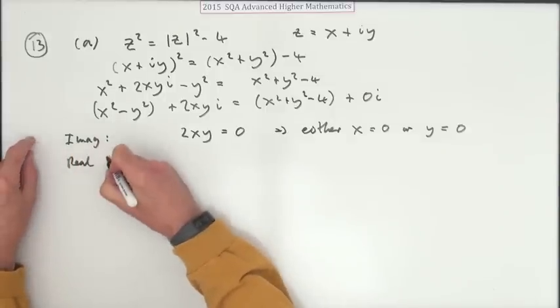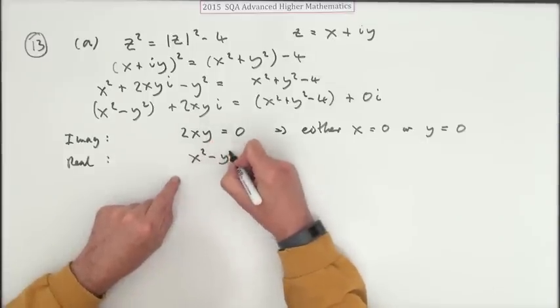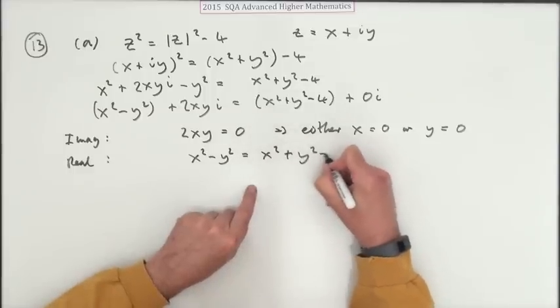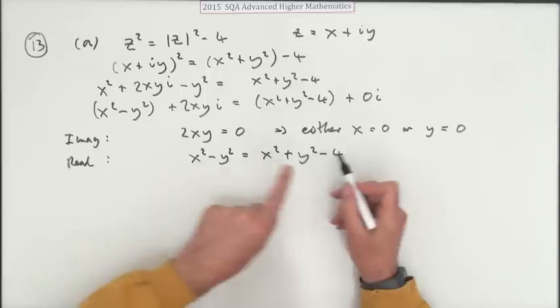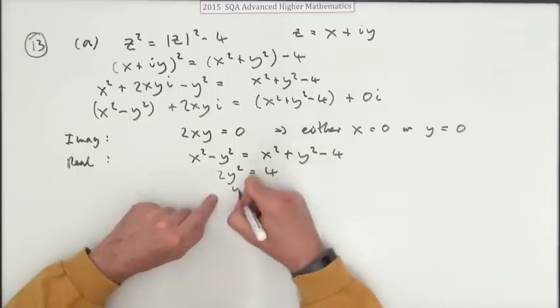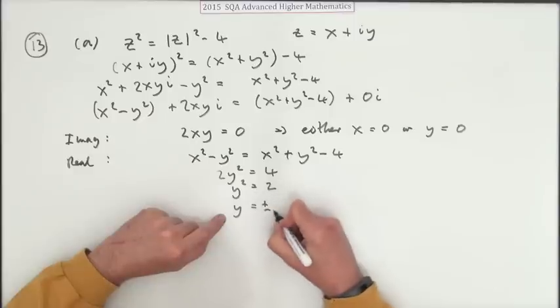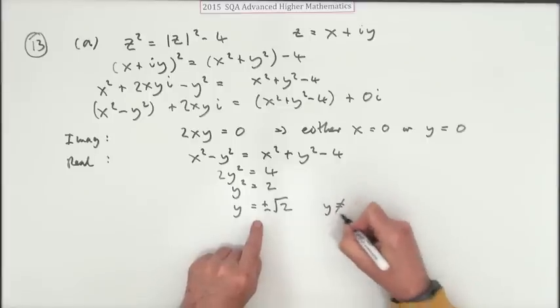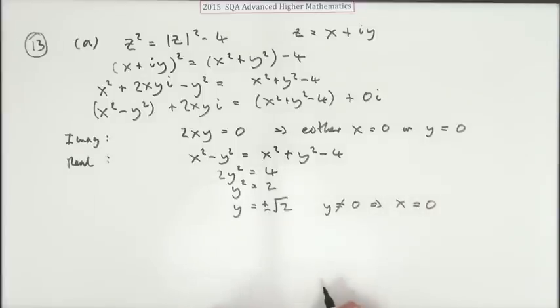Right, let's see what the real part tells us. The real part tells us that x² - y² = x² + y² - 4. x² disappears from this equation, and if I take that over and take that over I've got 2y² = 4. So y² is 2, so y is ±√2. And the important thing is y is not 0, which means that x must be 0.